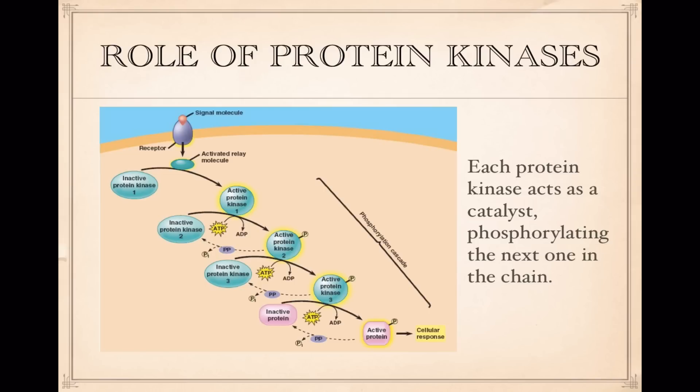The most important part of transduction are protein molecules in the cytoplasm called protein kinases. These kinases are inactive until they are phosphorylated, which means they don't do anything until they have a phosphate group added to them from ATP.